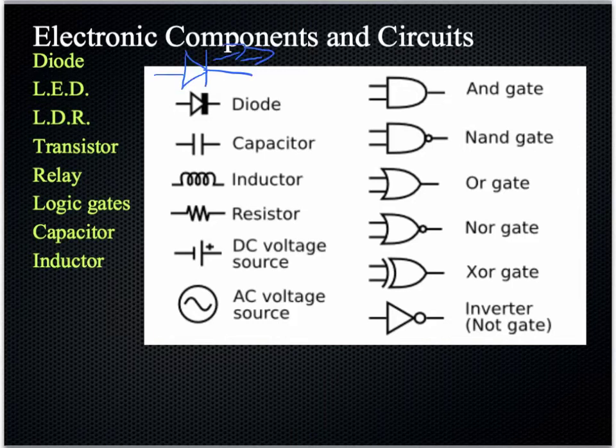Now, the light-emitting diode, the LED, has a very similar-looking symbol to the diode, except it also has these two arrows coming off it which indicate light coming out from the diode. The LDR symbol is very similar to a resistor,